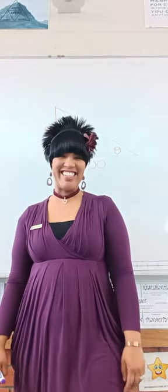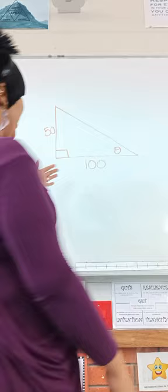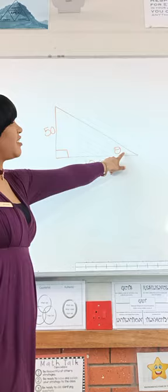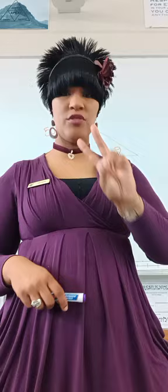Hello everyone. Today we're going to use the right angle triangle to find out what theta is. Theta is an angle, and we're going to use the trigonometric ratios. We have two sides — remember, it's either two sides and an unknown angle, or an angle with one side to figure out the other side.